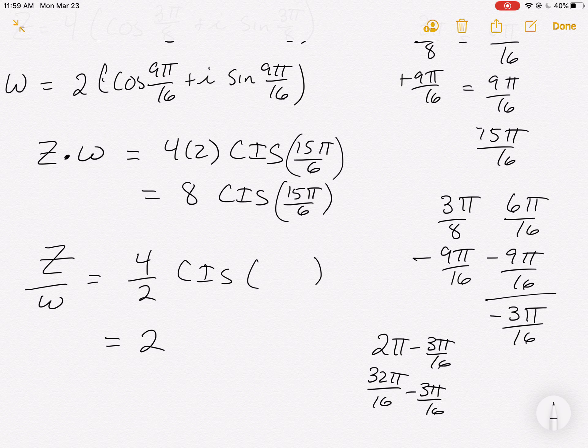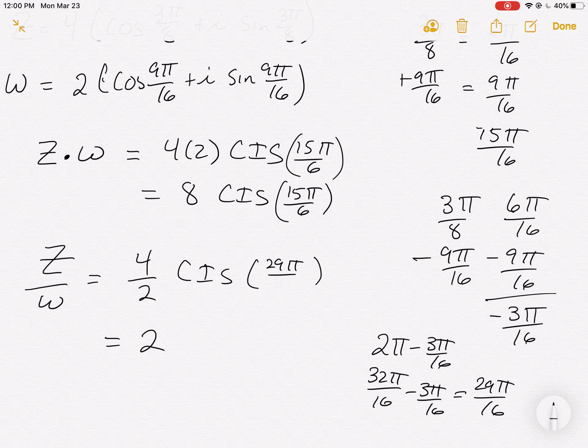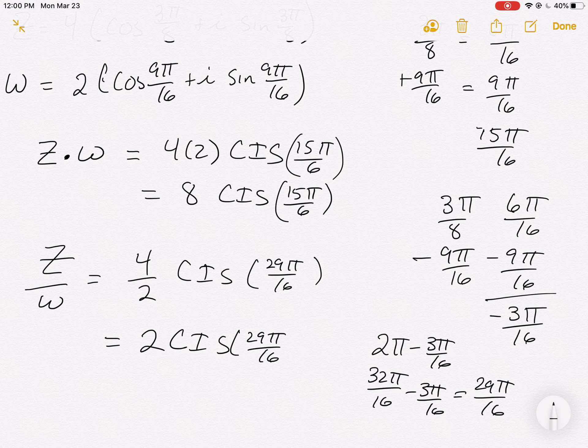And so in the back of the book, they're going to have 29π over 16. And so that's our answer, CIS of 29π over 16. So we have our first answer of 8 cosine 15π over 6 plus i sine of 15π over 6. And for Z divided by W, it's 2 cosine of 29π over 16 plus i sine of 29π over 16.